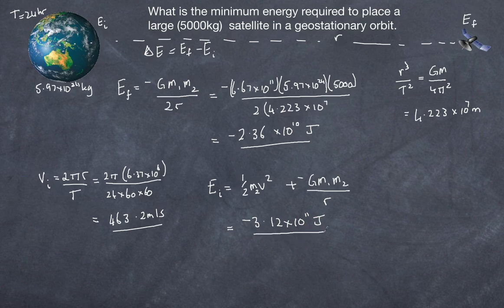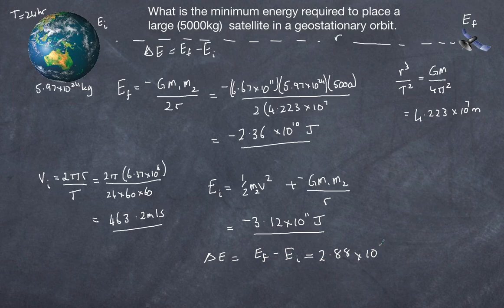The change in energy is the difference between the two values: negative 2.36×10¹⁰ minus negative 3.12×10¹¹, giving 2.88×10¹¹ joules, or 288 gigajoules of energy required to launch the satellite into geostationary orbit.